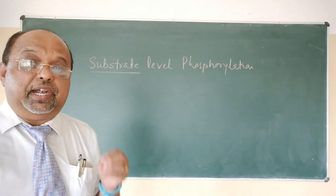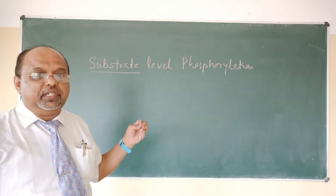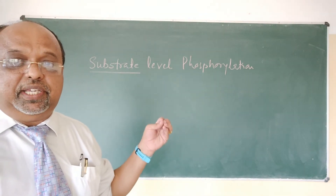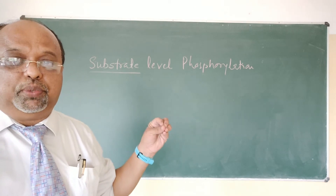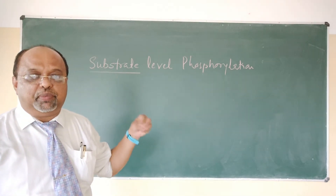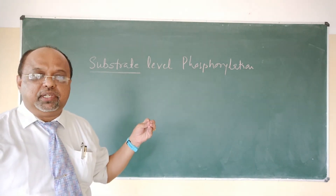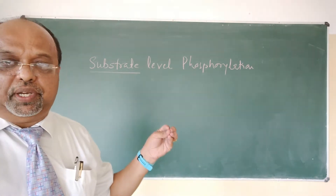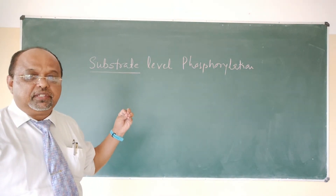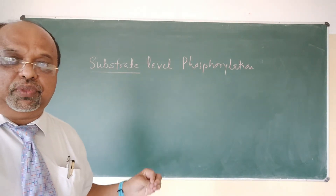So what is meant by substrate-level phosphorylation? As the name itself indicates, substrate-level phosphorylation means the substrate is the high-energy phosphate group donor — it donates that high-energy phosphate group to ADP (adenosine diphosphate), and that becomes ATP (adenosine triphosphate). That means ATP formation occurs at the substrate level, which is why the name substrate-level phosphorylation is given.